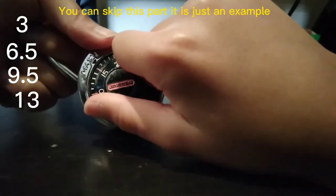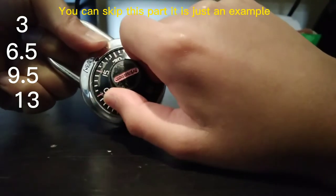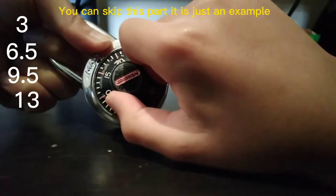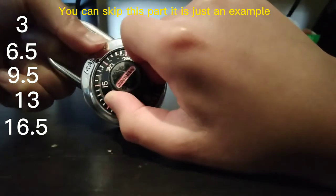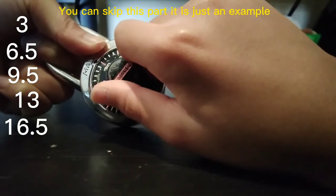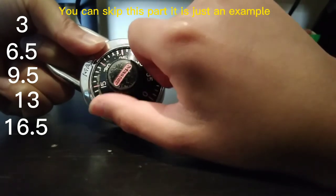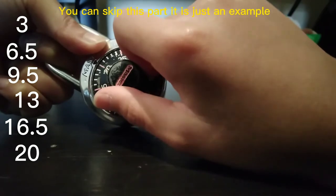It's getting stuck between 16 and 17, so the middle number is 16.5. Move it over. Getting stuck between 19.5 and 20.5, so the middle number is 20.